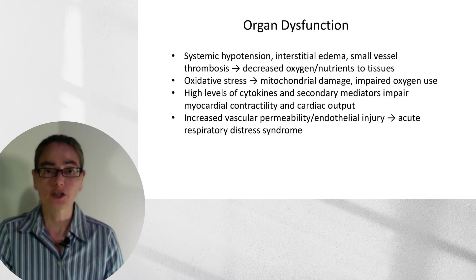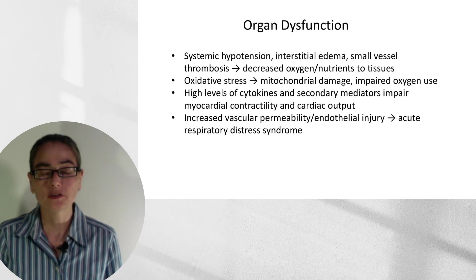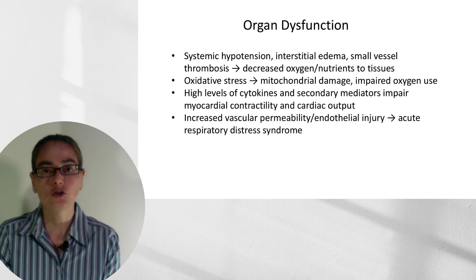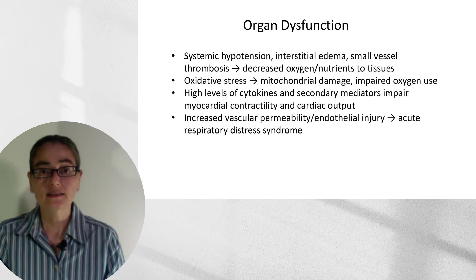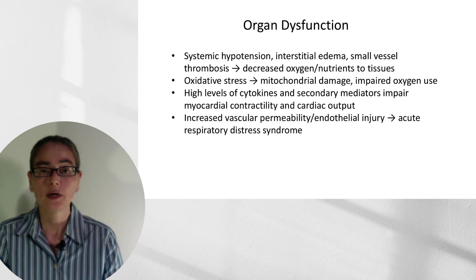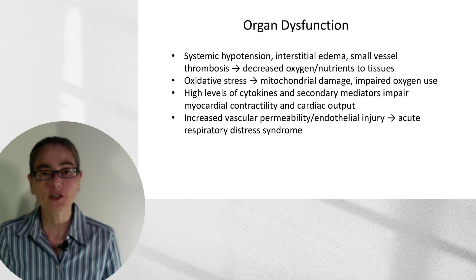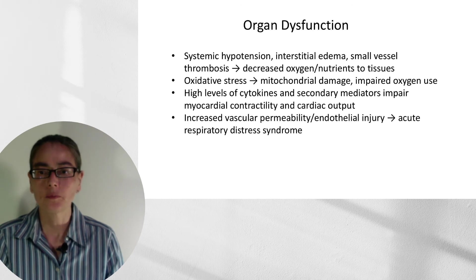Finally, we have organ dysfunction. Systemic hypotension with interstitial edema and small vessel thrombosis all lead to decreased oxygen and nutrients to the tissues. Oxidative stress damages mitochondria and further impairs oxygen use. High levels of cytokines and secondary mediators impair myocardial contractility and cardiac output, and increased vascular permeability and endothelial injury can lead to acute respiratory distress syndrome. This is why so much needs to be addressed through fluids and pressors to keep intravascular volume moving.